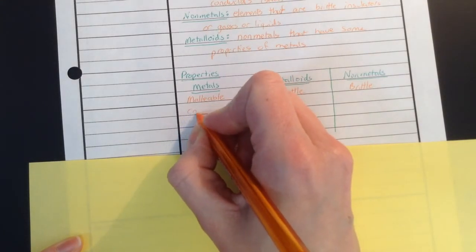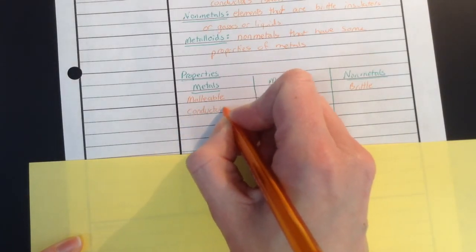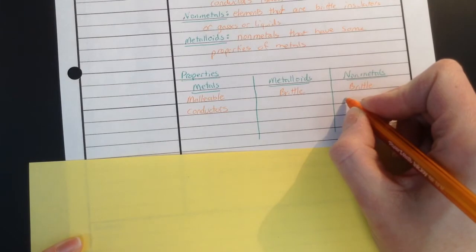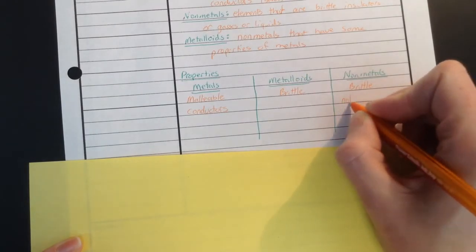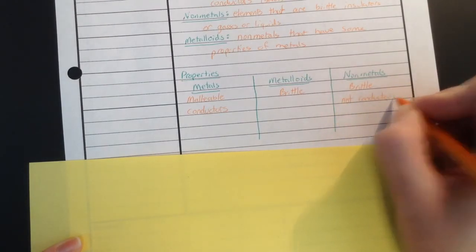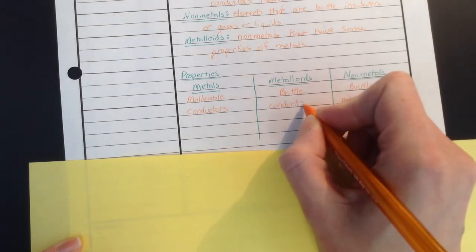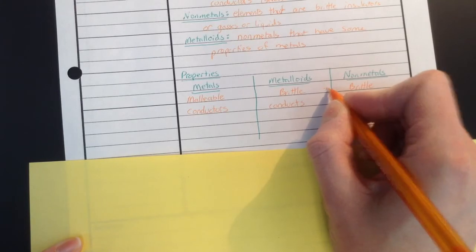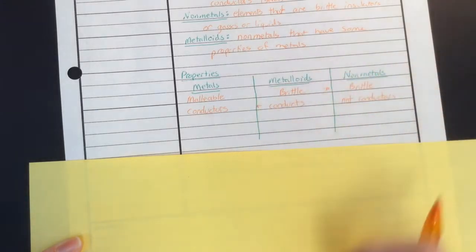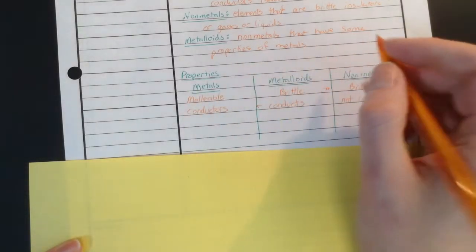They are good conductors. Metals are good conductors. Nonmetals are not conductors. And metalloids do conduct. So there they've got one property that matches the nonmetals and one that matches the metals here. So they can conduct, and that's what makes them special, those metalloids. They have some pretty awesome uses there.